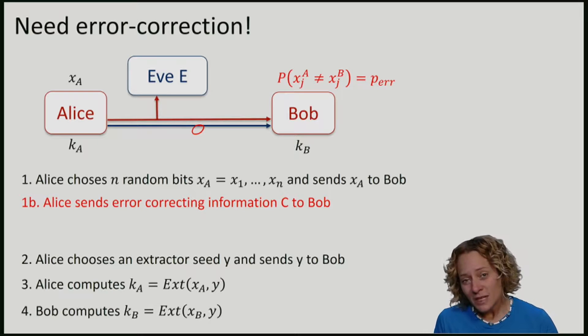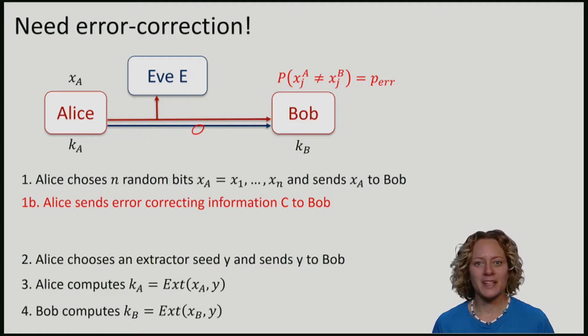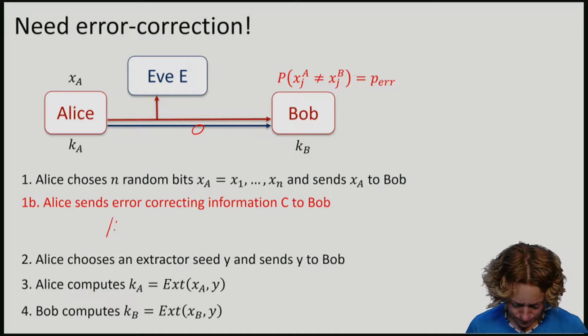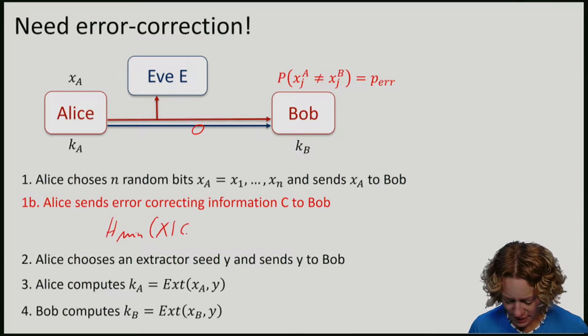And this error-correcting information might help her in her guess for x. This means that the min-entropy that we want to consider is now the min-entropy of x, given C and E.